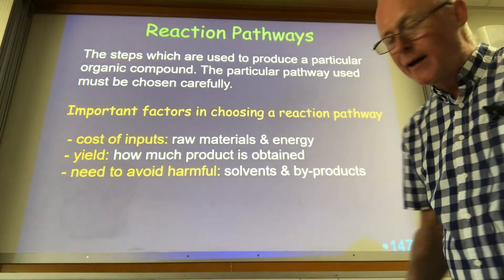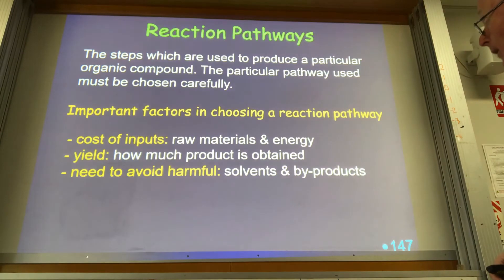Okay, now we put it all together and look at reaction pathways. We've looked at a whole lot of different reactions. Those reactions can be put together if we want to make a particular chemical. Now there are usually a range of different paths that can be followed to get the same product, and we need to choose the best path - the one that uses cheapest raw materials, least energy, one that has the highest yield, you get a lot of product for a particular amount of reactant.